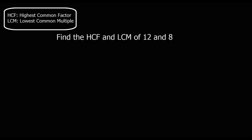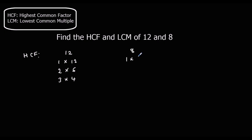This question is asking us to find the highest common factor and the lowest common multiple of 12 and 8. So we'll start with the highest common factor. What we're going to do is list the factors of 12. So 12 can be made by 1 times 12, 2 times 6, or 3 times 4. For 8, we can have 1 times 8 or 2 times 4.